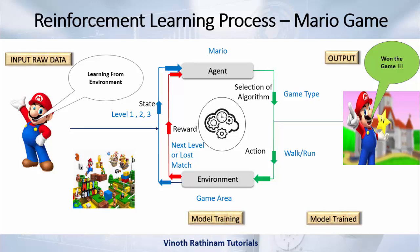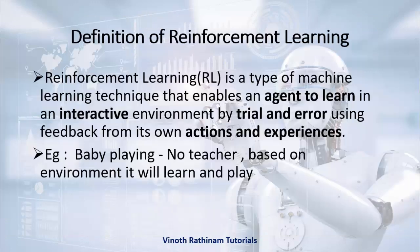This is the reinforcement learning process, similar to our previous example. The only thing you have to remember is everything is based on reward and penalty — reward means a positive value, penalty means a negative value. Now let's see the formal definition: reinforcement learning is a type of machine learning technique that enables an agent to learn in an interactive environment by trial and error using feedback from its own actions and experience. Agent means robot, interactive environment is where we play, and using the trial and error method it keeps improving from feedback with its actions and experience.